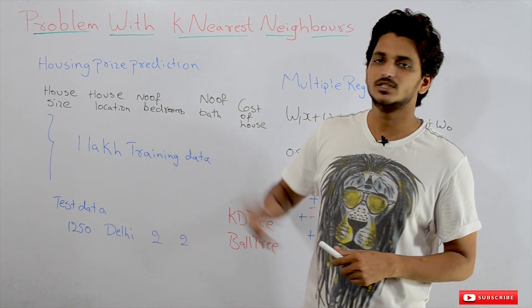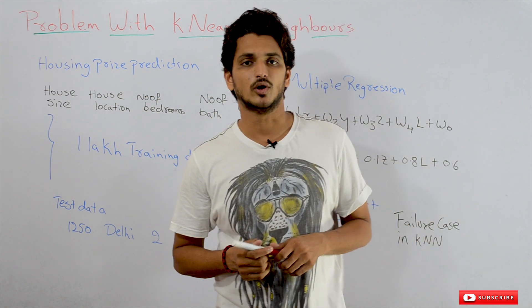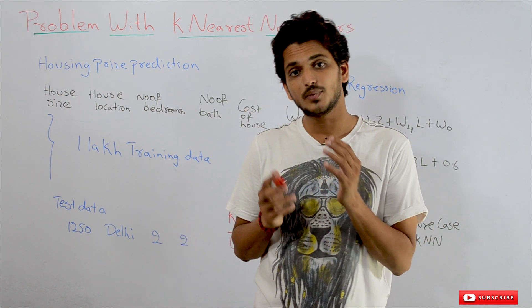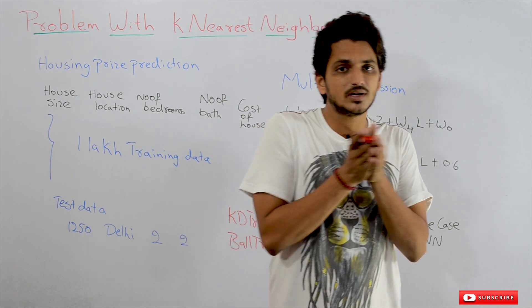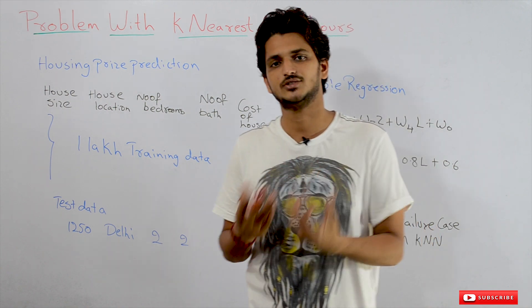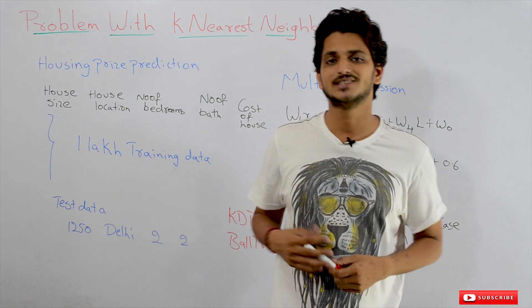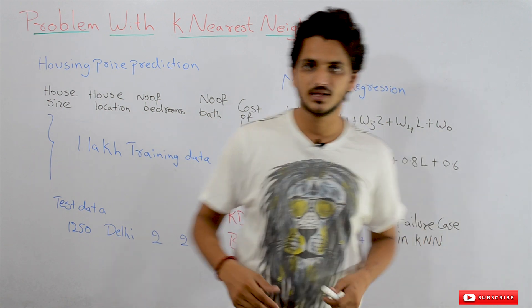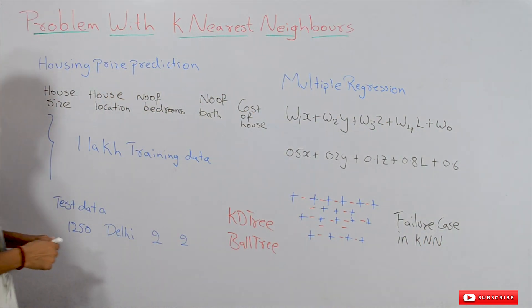K-Nearest Neighbors is a non-parametric based model. So what's a non-parametric model? What's a parametric model? First, we have to understand this. Let's take an example to understand the difference between parametric and non-parametric based models.